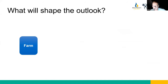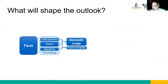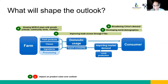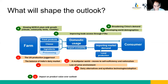The dairy value chain — which I'm sure you've seen in different forms — is represented here with different parts of that value chain as distinct components to think about when looking at change over time. In the next decade, I'll layer on the key factors which we believe will shape the trade balance and the value of commodities.